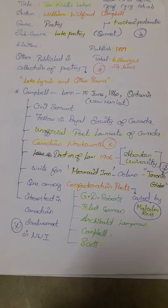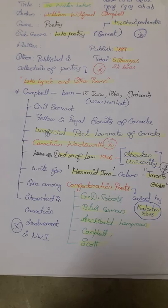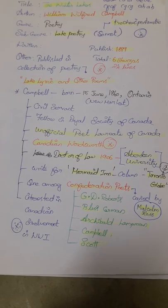He is a civil servant and a fellow in Royal Society of Canada and an official poet laureate of Canada. He is also known as the Canadian Wordsworth. He did a Doctorate of Law in 1906 and he wrote for the Mermaid Inn column, Toronto Globe.